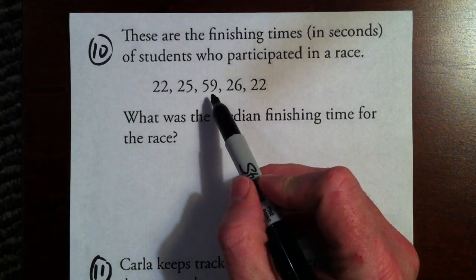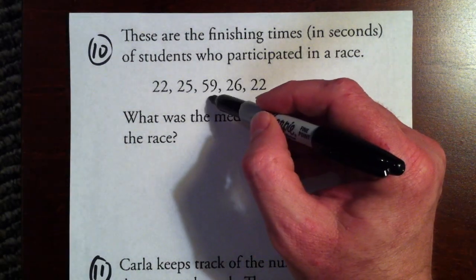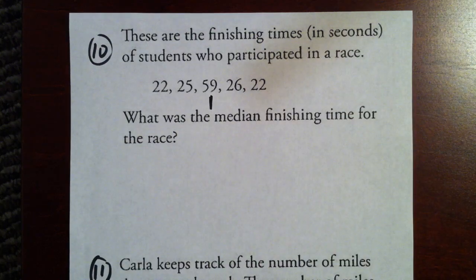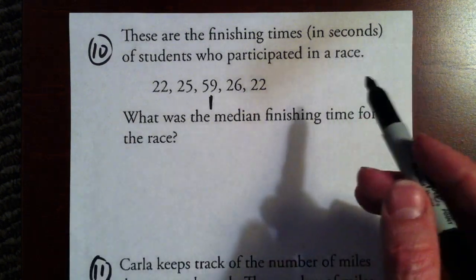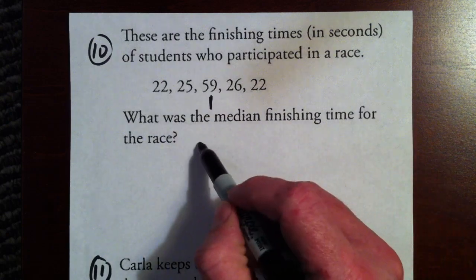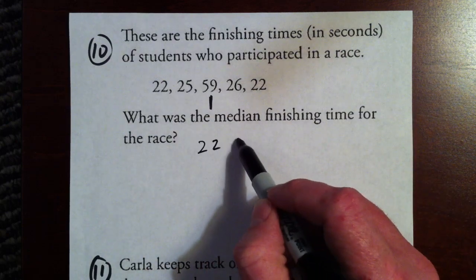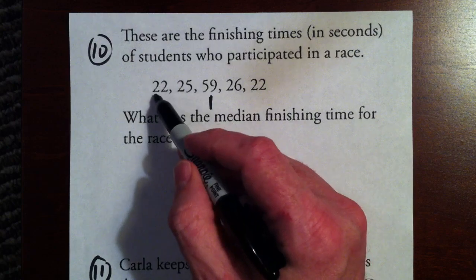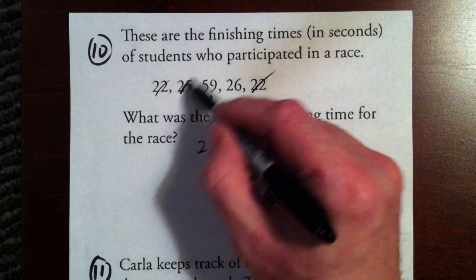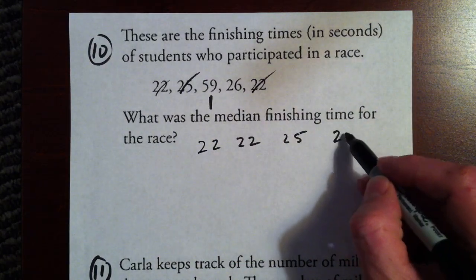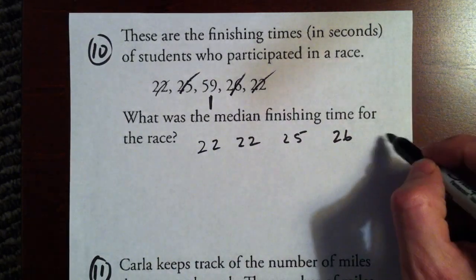Continuing from before, the median is the middle number, but it's not just the middle number when it's all out of whack like this. You have to put it in numerical order from least to greatest. Smallest number is 22, then we have another 22, then we have a 25, mark them off every time, then we have a 26, and then we have a 59.